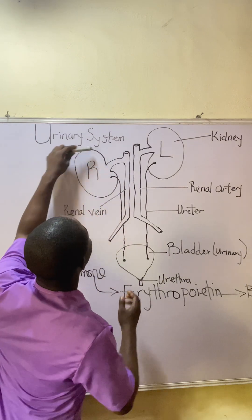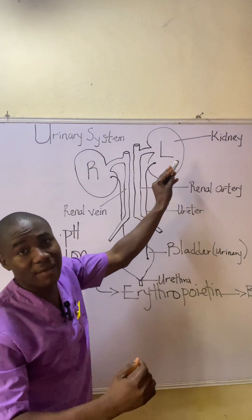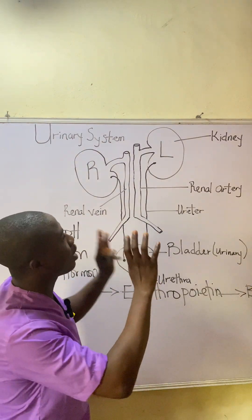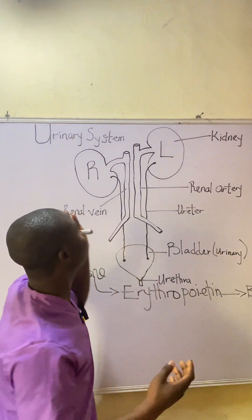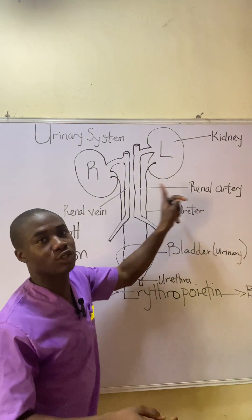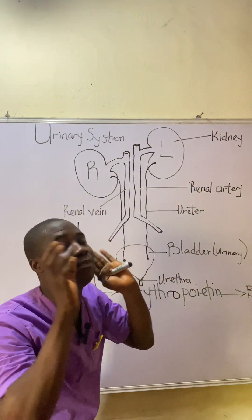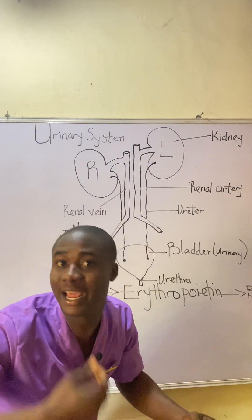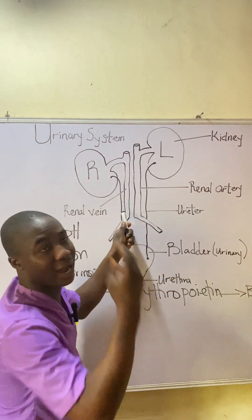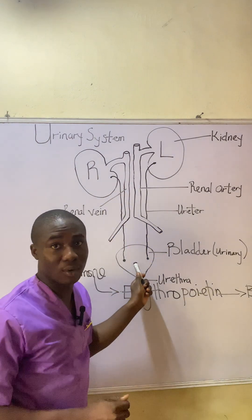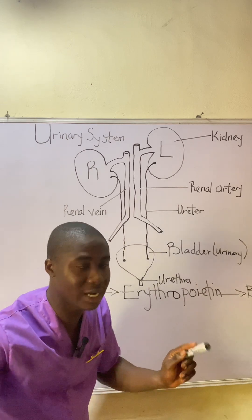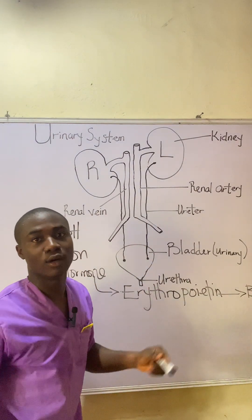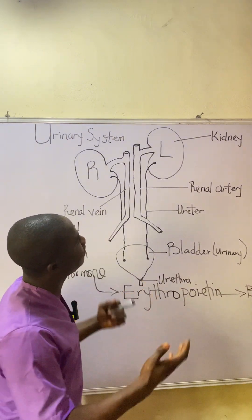The reason the right kidney is a bit lower compared to the left kidney is that above the right kidney there is an organ called the liver. After the blood is filtered by the kidney, the filtrate is transported to the ureters — we have two ureters. The ureters take this filtrate to the bladder. This filtrate is mostly liquid in the form of urine. When the bladder is filled, the person will have the urge to urinate, and the urine passes through the urethra and goes out as a waste product.